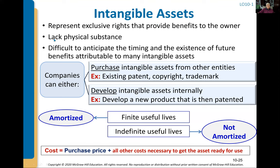Intangible assets lack physical substance, but they can be incredibly valuable. Think about Netflix or Paramount Plus — their biggest asset is the intangible copyrights to show movies. Apple Music pays for the copyright to all that music you stream. Spotify's big asset is intangible assets. You can't touch and feel them, but these companies would not exist without being able to purchase those intangible assets. There are two types: those with finite useful lives, and those with indefinite useful lives.